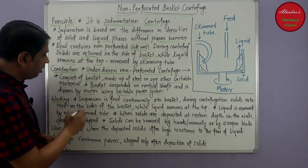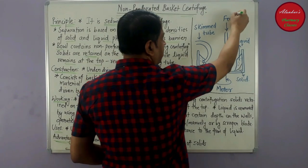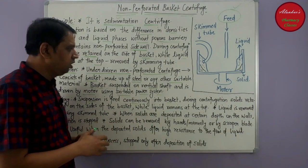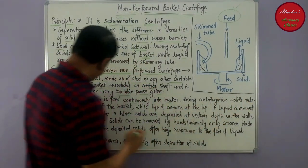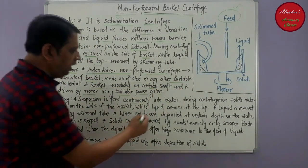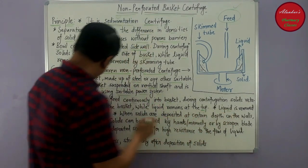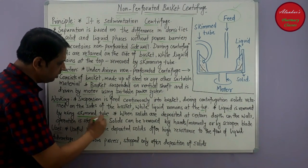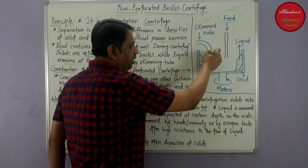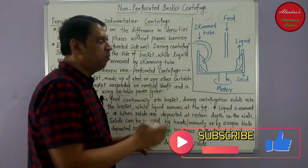Regarding its working, the suspension is fed continuously into the basket through a feed pipe. During centrifugation, solids are retained on the sides of the basket while liquid remains at the top of the solid portion. The liquid is removed by using a skimmed tube — this skimmed tube allows the liquid layer over the solids to be removed continuously.